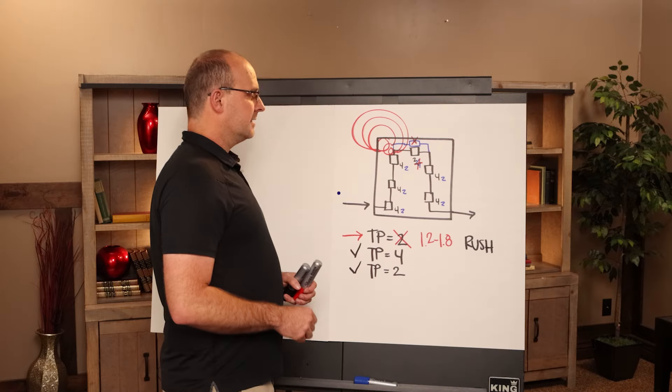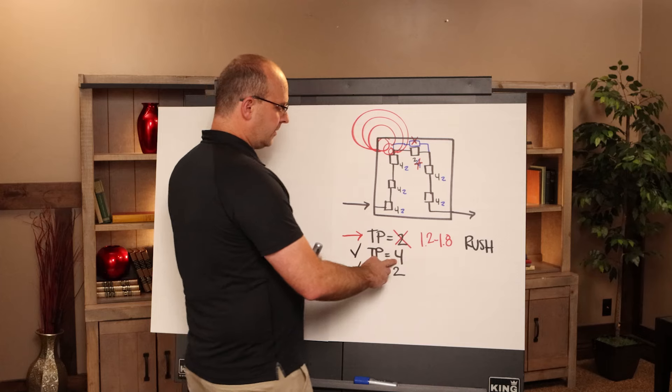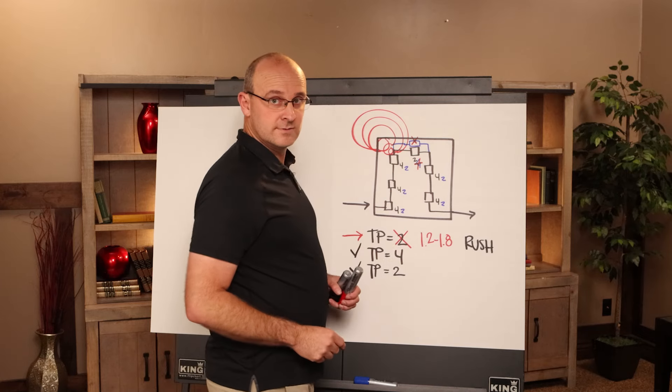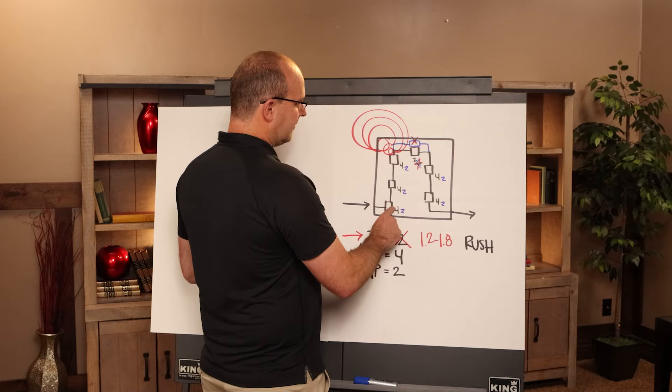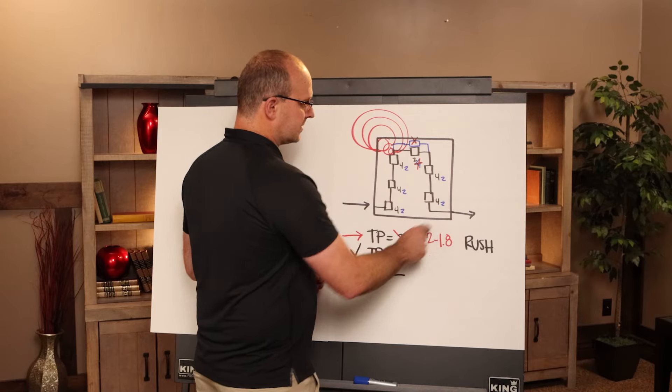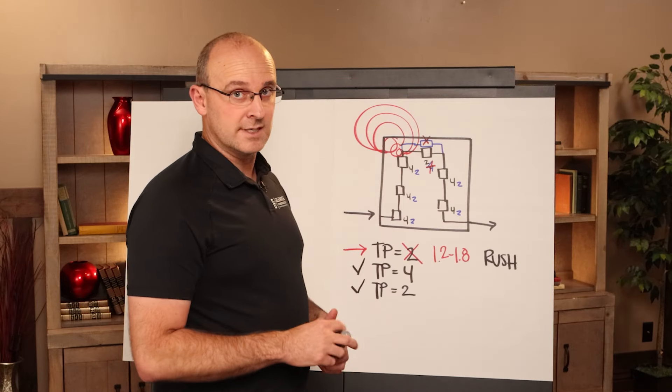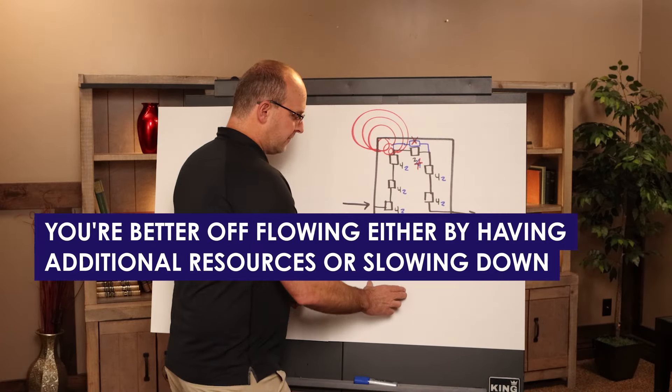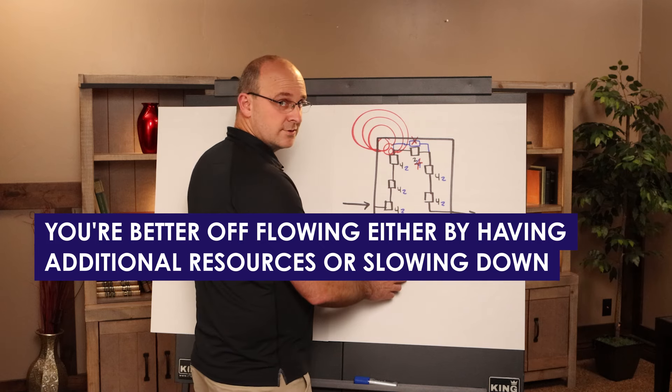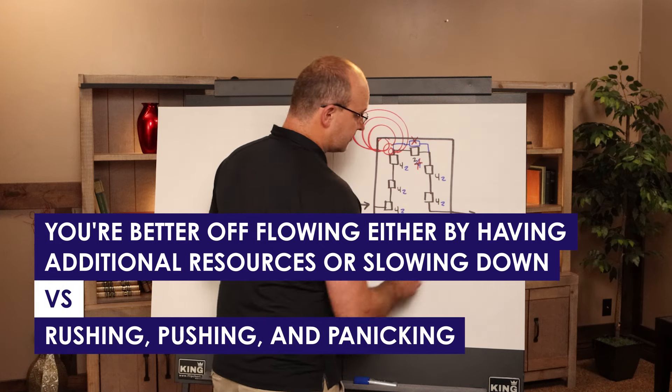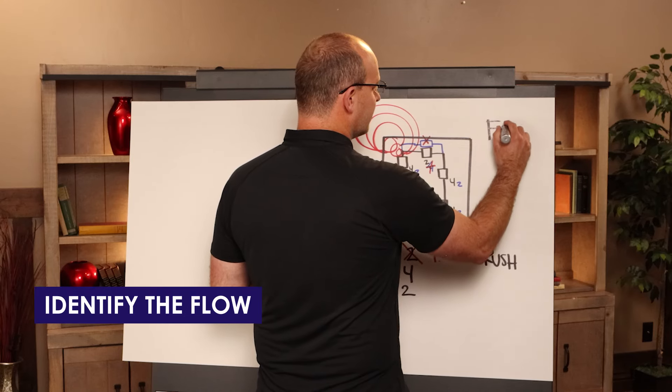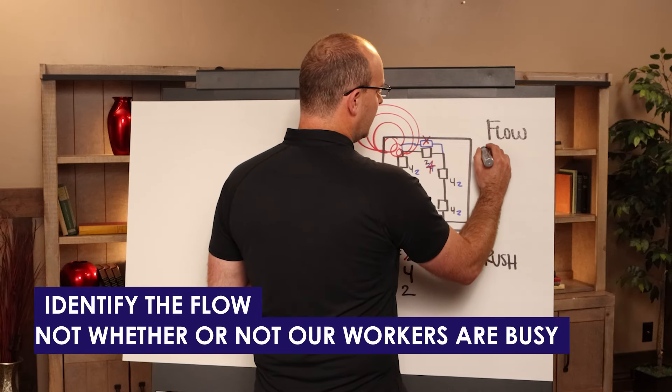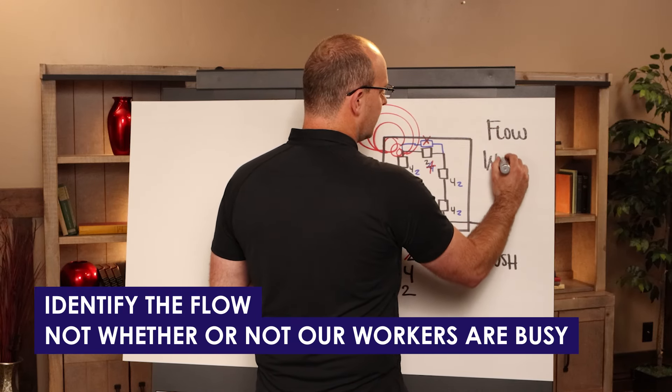Now, when we look at this, you are either going to have to get another resource or you're going to have to level this out and have these machines work 30% of the time. Here's the key concept that you're better off flowing either by having additional resources or slowing down versus rushing and pushing and panicking. So we should be identifying the flow, not whether or not our workers are busy.